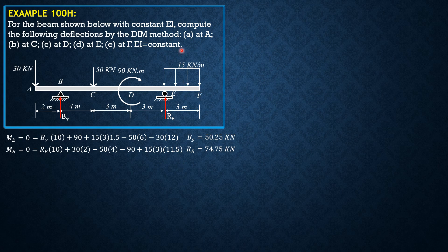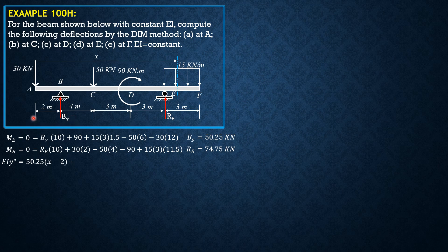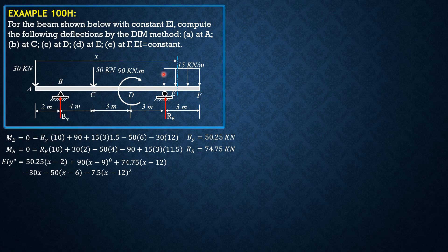Then we set up the moment equation for the differential equation up to EF, the last section. So that is X. EI Y double prime equals BY 50.25 times (X minus 2) plus 90(X minus 9)^0 plus RE 74.75 times (X minus 12) minus 30 times X minus 50 times (X minus 6) minus 7.5 times (X minus 12) squared.